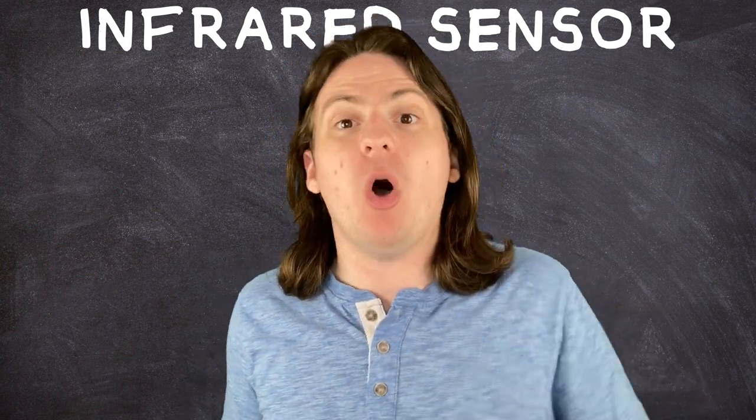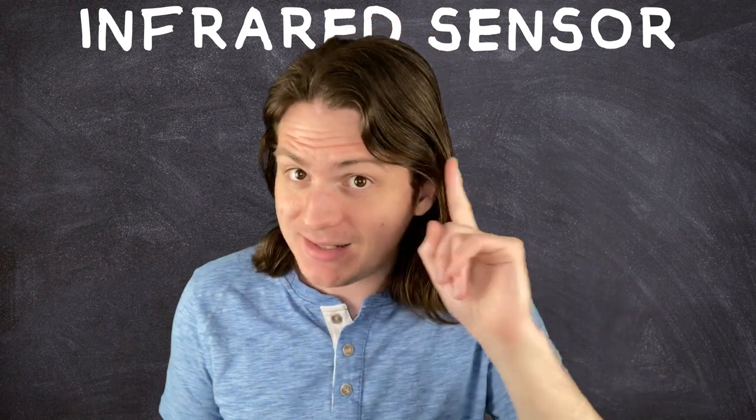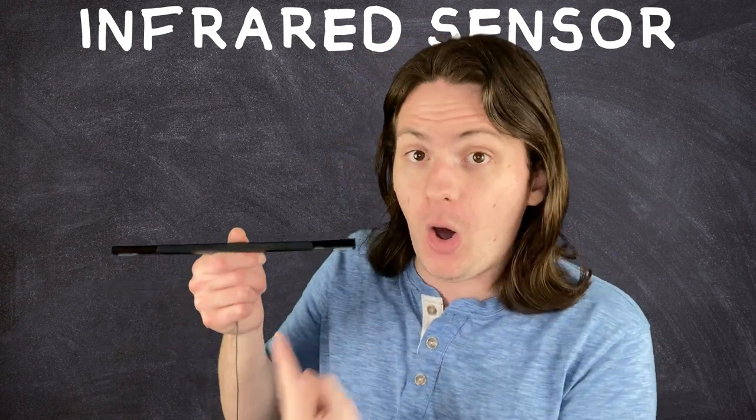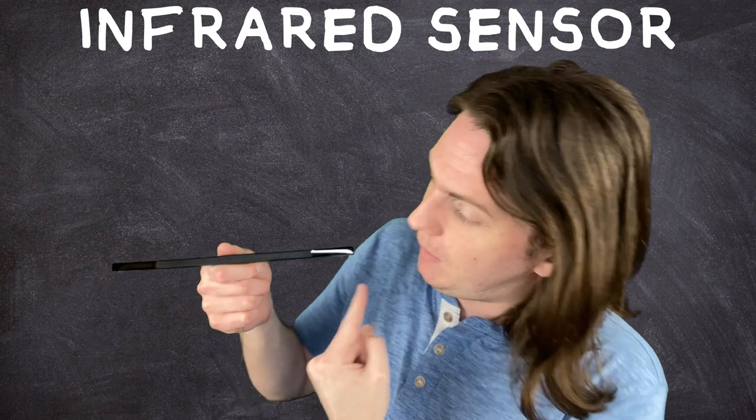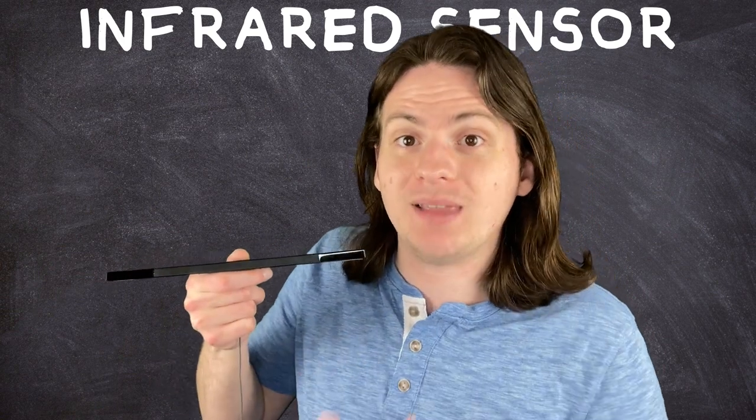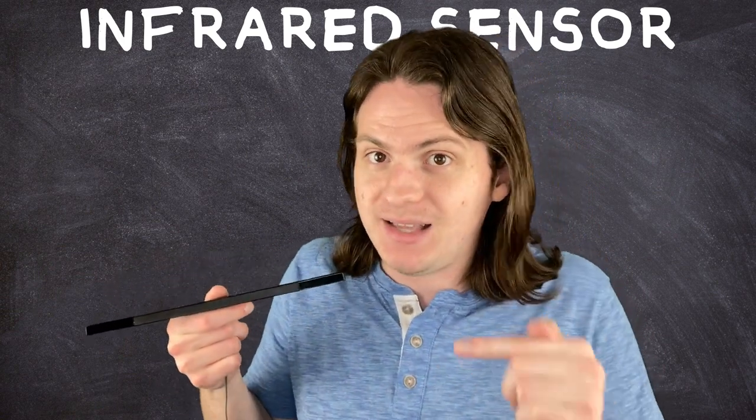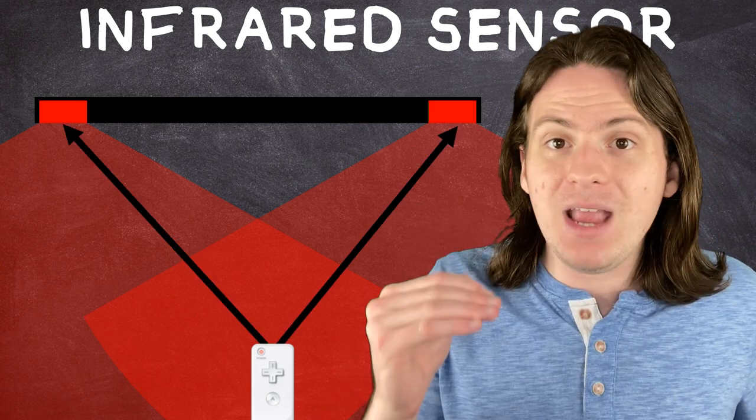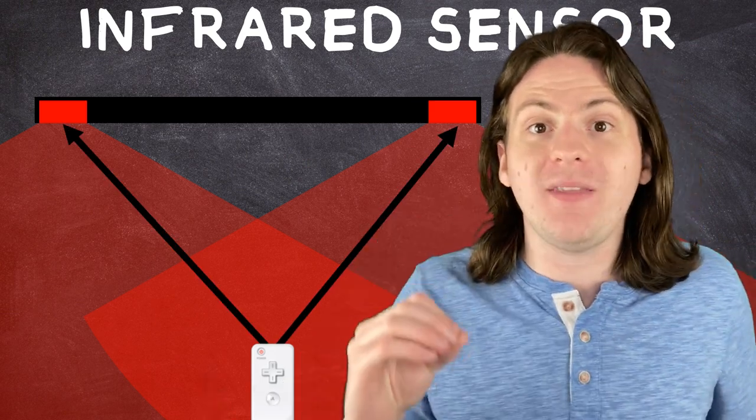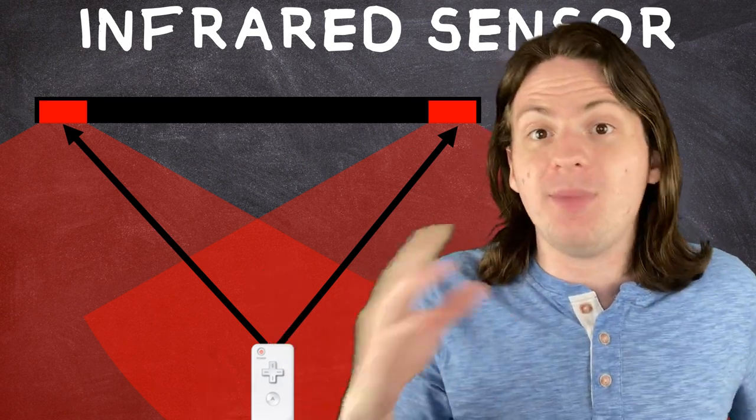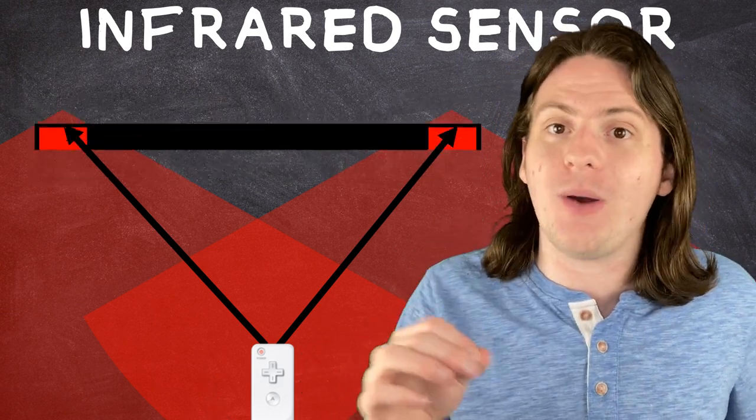Now, I always thought that the Wii Remote let out the IR light, and the bar below your TV would pick it up, but that's not actually true. Despite the fact that it's called a sensor bar, this bar doesn't actually do any sensing. Instead, it's basically just a fancy lamp. These two glossy bits on the end here have infrared lights in them, and the remote has the sensor. The light leaves the bar and is picked up by the remote, which can measure the angle that the light is coming from. If we know that the light sources are always the same distance apart, then you know the drill by this point. Math, math, math. We can figure out how far away the Wii Remote is from the TV, and where it's pointed.